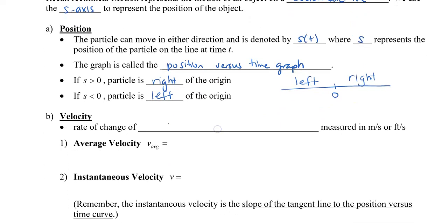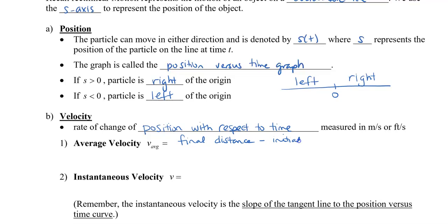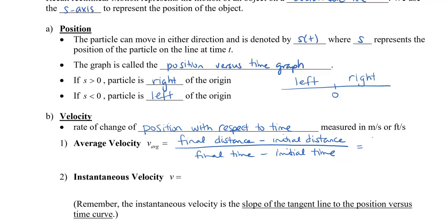The next is velocity. Velocity is the rate of change of position with respect to time, measured in meters per second, feet per second, or some kind of distance per time. The average velocity, we're going to call it v-subscript-avg, meaning average. That's going to be our final distance minus our initial distance, all divided by our final time minus our initial time. We can abbreviate this in symbolic notation as s of b minus s of a, all divided by b minus a, where b and a are times.